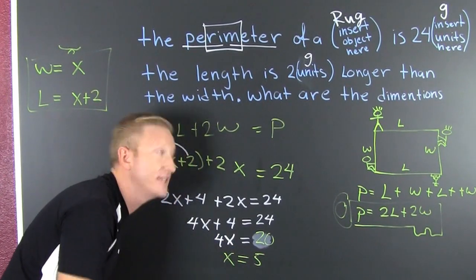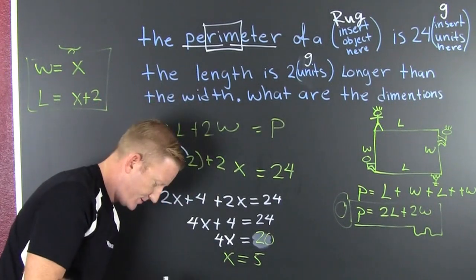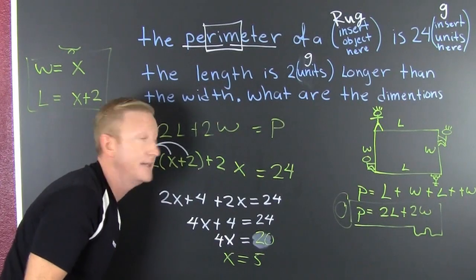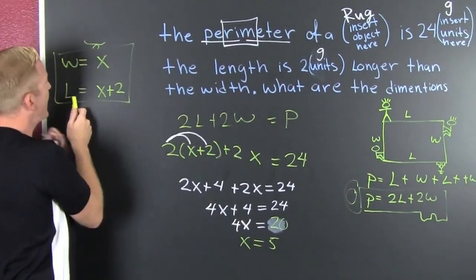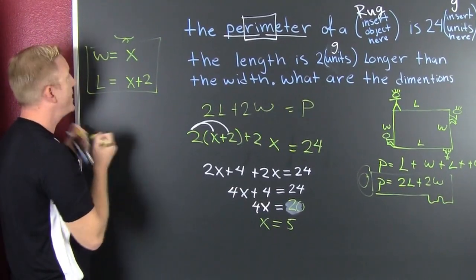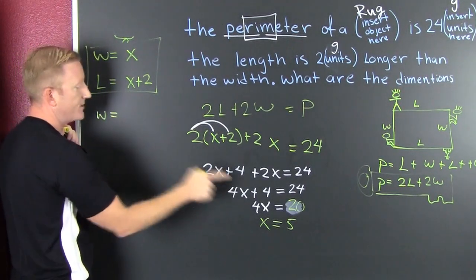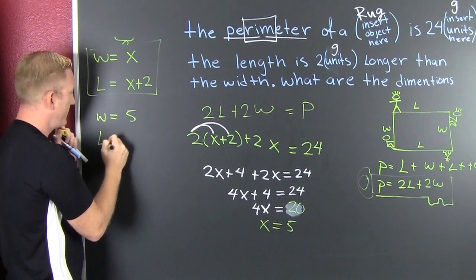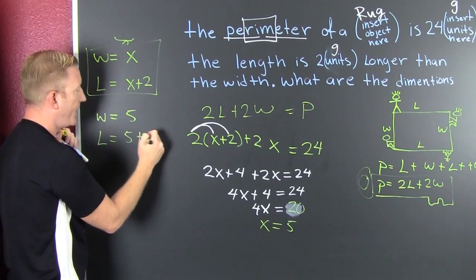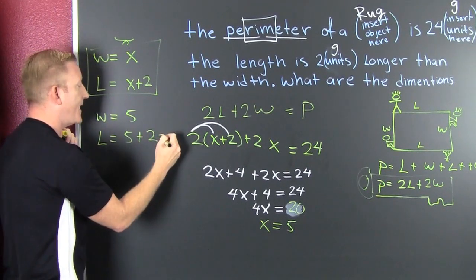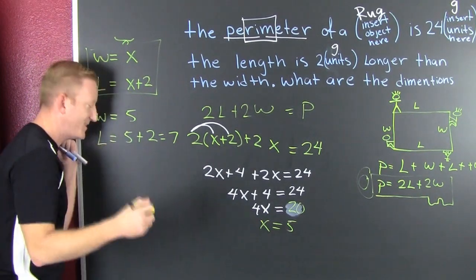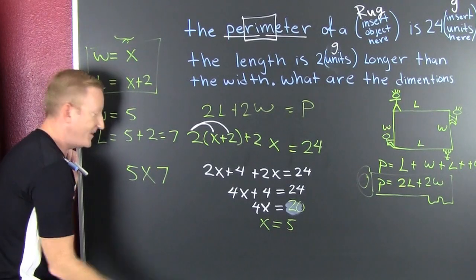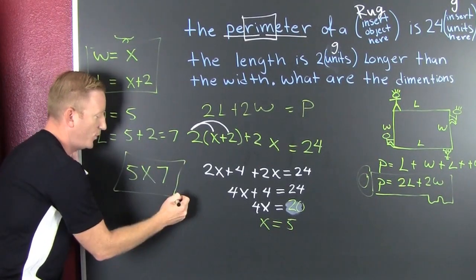And I'm looking for the dimensions of this rug. This fence. This garden. This sidewalk. This rectangular region. And I combine that by looking here. Now I know what my W is. My W was 5. And then my length is gonna be 5 plus 2. So then that's 7. Did you get the picture? This one's a 5 by 7.